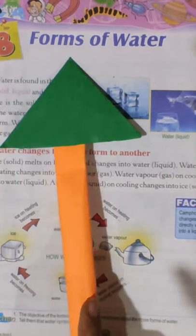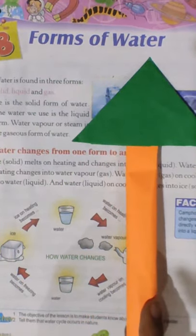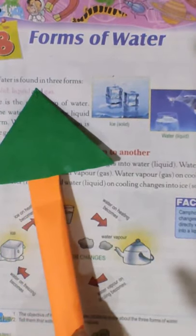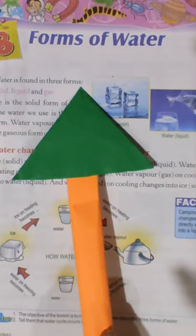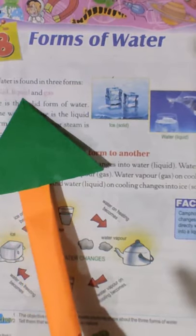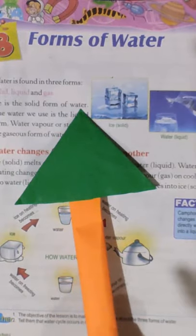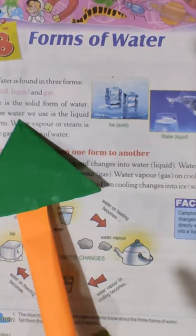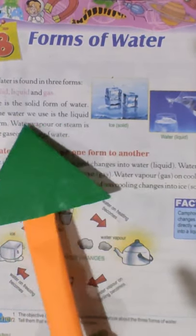Lesson 8: Forms of water. Water is found in three forms: solid, liquid, and gas. Ice is the solid form of water. The water we use is the liquid form.